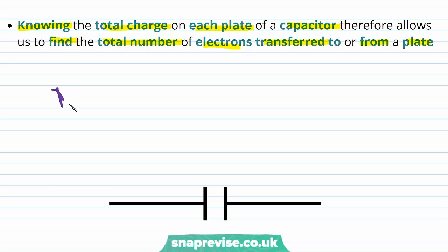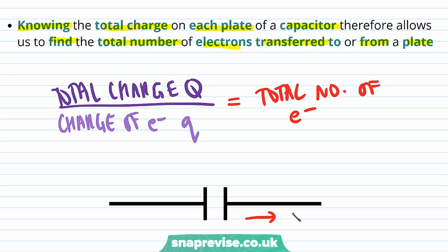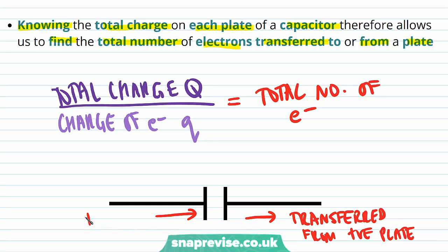If we know the total charge on each plate of the capacitor, we can find the total number of electrons transferred to or from a plate. The total charge Q divided by the charge of an electron q equals the total number of electrons n — either the number transferred from the positive plate or transferred to the negative plate.